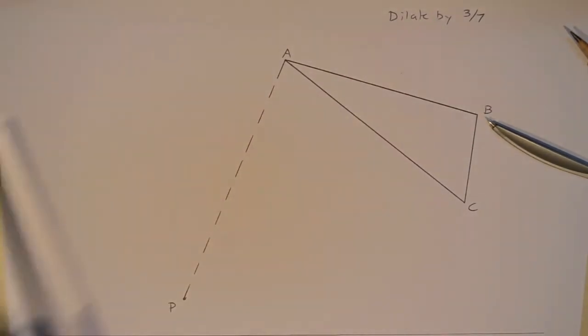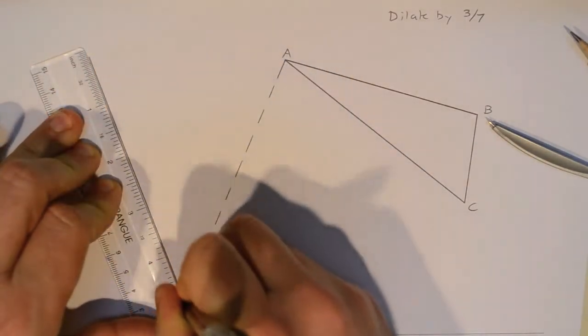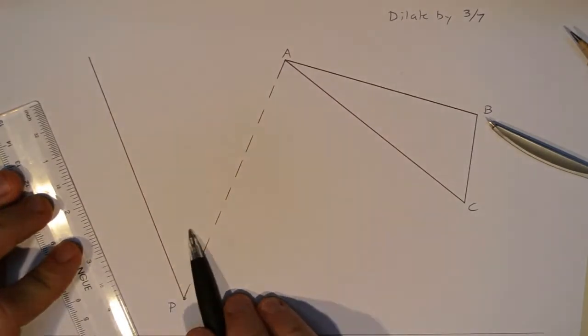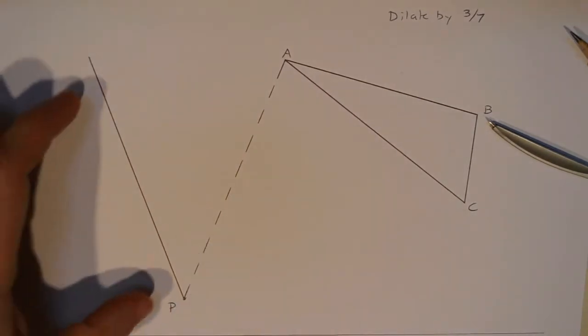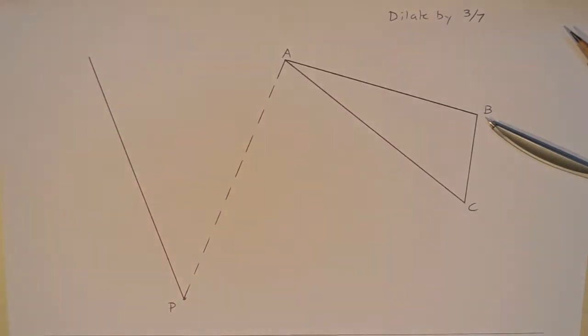So to locate that point precisely, we're going to begin by making a new line segment. This line segment is almost completely arbitrary. It's going to go off at some angle. I like to do about a 45-degree angle, and the purpose of this line segment is for me to create some equal segments along it, so I can create the ratio I need.